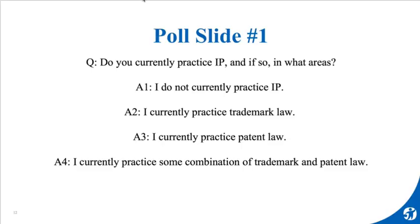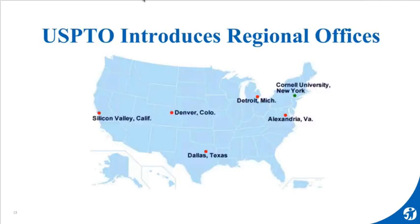IP is predominantly a national practice area, but you're starting to see more of a regional focus. The USPTO itself has really emphasized being more available to entrepreneurs and attorneys. With that, they've opened up regional offices under the America Invents Act. The locations are generally centered around areas of high entrepreneurial activity or strong engineering centers — Silicon Valley, Denver, New York — all certainly make sense from that perspective.